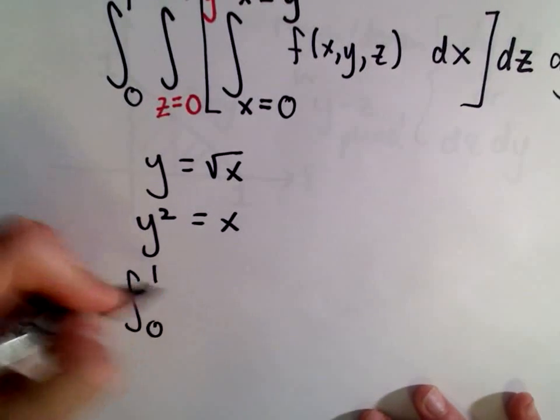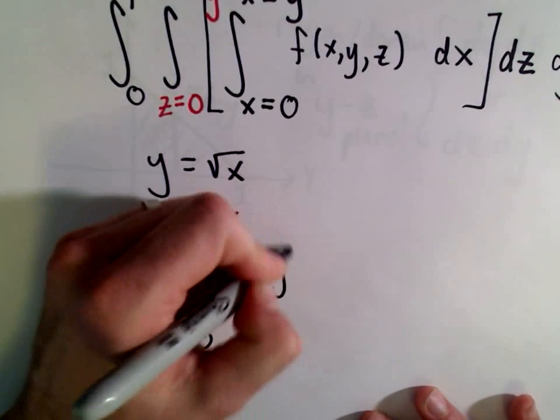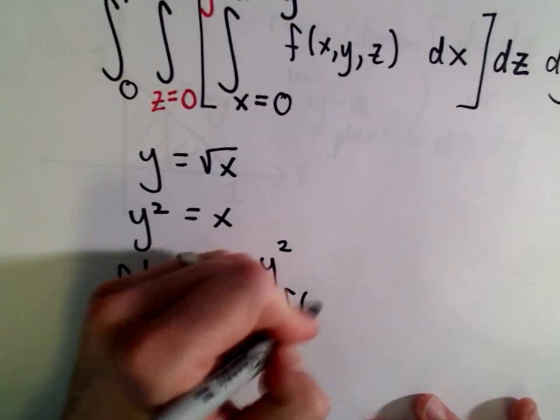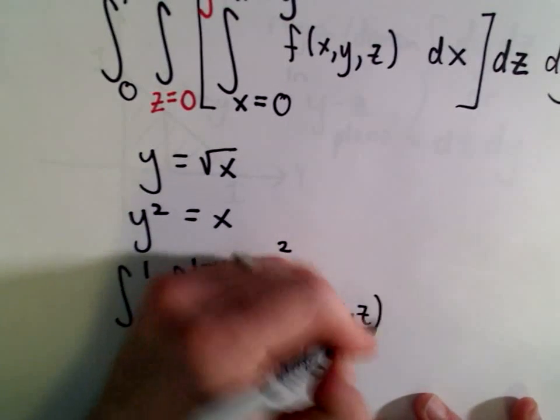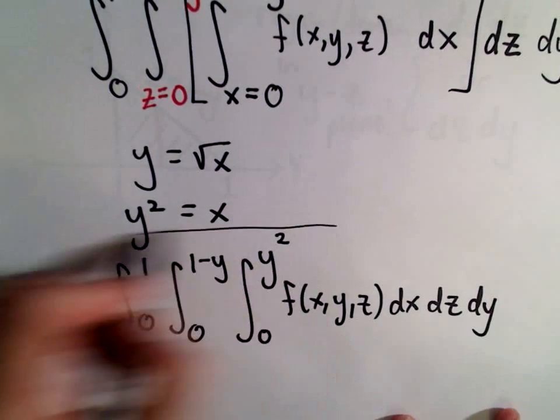And now I've got it set up yet another way. So zero to one, zero to one minus y, zero to y squared. Again, we've got our function, f of x, y, z, dx, dz, dy. That's how you would see it written.